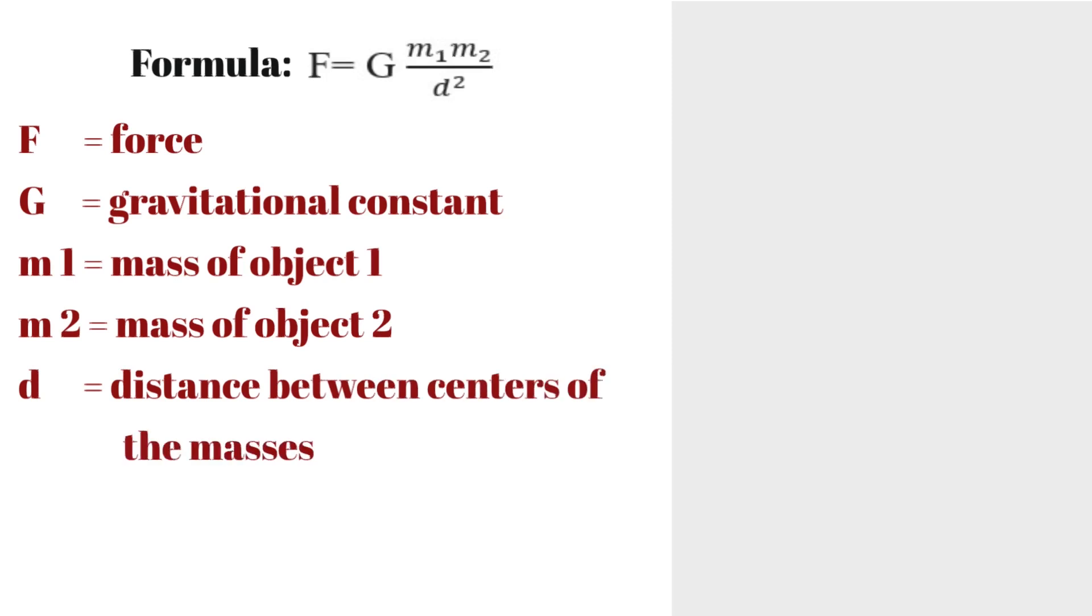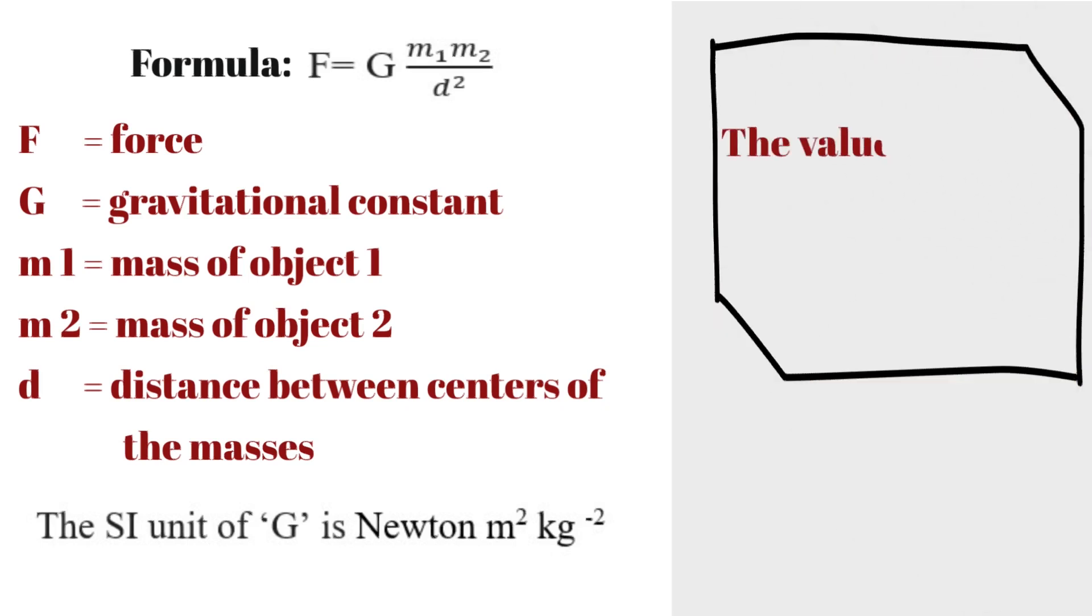m₁ is mass of object 1 and m₂ is mass of object 2, and d is the distance between centers of the masses. Now the SI unit of G is Newton meter squared per kilogram squared, and the value of G is 6.673 × 10⁻¹¹ N·m²/kg². It was experimentally measured by Henry Cavendish.